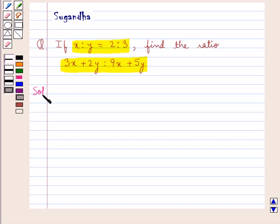Let's proceed with the solution now. We are given the ratio x is to y is equal to 2 is to 3. This means x upon y is equal to 2 upon 3.